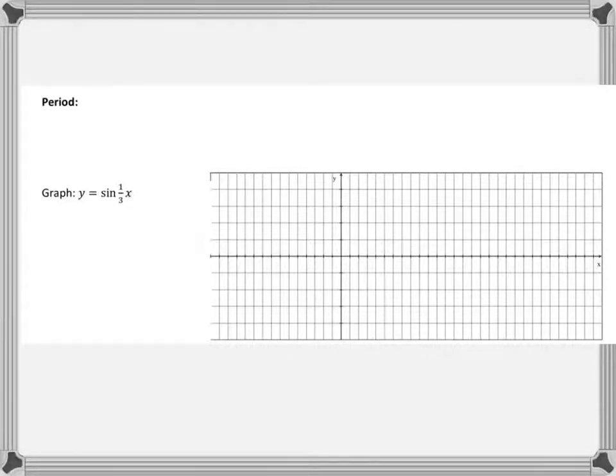Alright guys, I'll be writing and talking on this one, so it might be a little bit slower. But now we're going to get into graphs that have all of the possible transformations. So we're going to get into graphs that now have this B value or an X coefficient here. And that's going to change the period of our graph, which I think we've talked about on that first page.